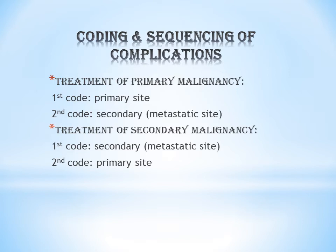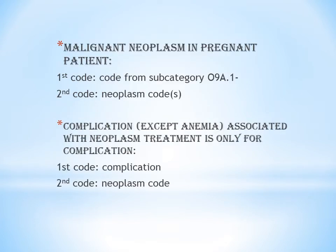For example, if a patient has a malignant neoplasm of the right breast that spreads to the right lung, the primary site is the right breast and the metastatic or secondary site is the right lung. If the patient comes for treatment of the right lung, code the right lung first and the right breast second. If the patient comes for treatment of the right breast, code the right breast first and the right lung second. Whatever is the reason for encounter should be the first code, and the other malignancy should be the second code.